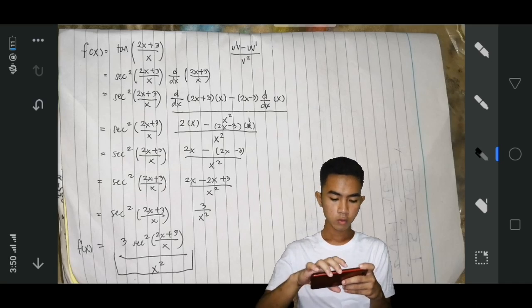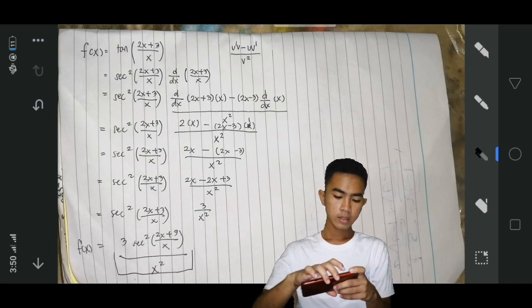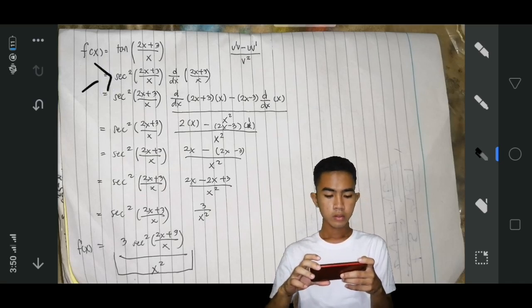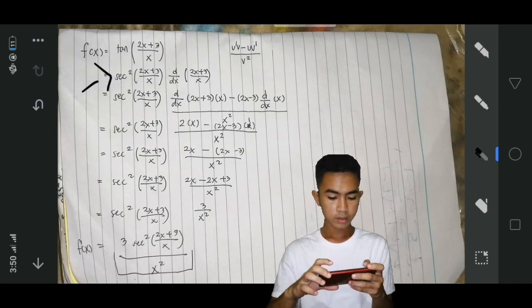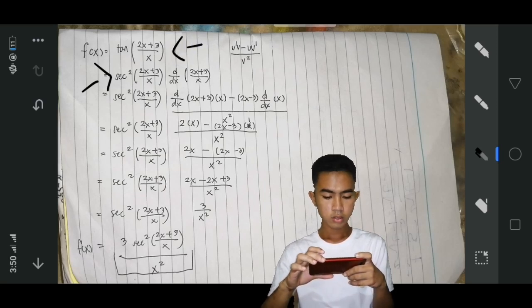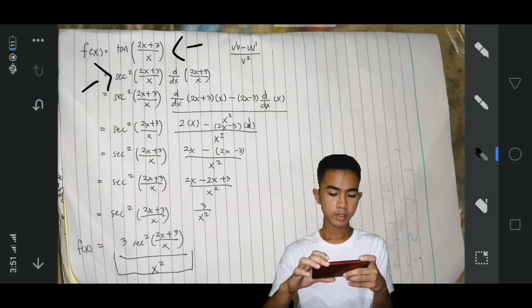First, we have to derive tan into secant squared. After, derive f of x, which is 2x plus 3 over x.